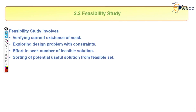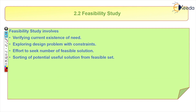The second step is feasibility study. This involves: number one, verifying the current existence of the data — whether a similar product is already available. Number two, exploring the design problem with its constraints — if a similar product exists, what problems is it facing and what are its limitations? Number three, finding the number of feasible solutions — what are the manufacturing constraints and how can we solve them to arrive at a feasible solution?